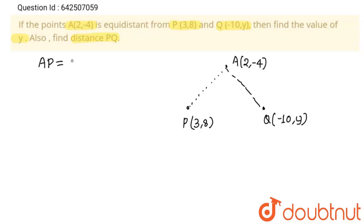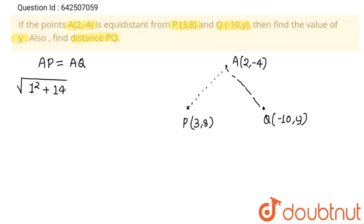AP equals AQ. Now I am going to use the distance formula for finding distance AP. The distance formula is: square root of (x2 - x1)² + (y2 - y1)². So (3 - 2)² = 1² = 1, plus (8 - (-4))² = 12² = 144.